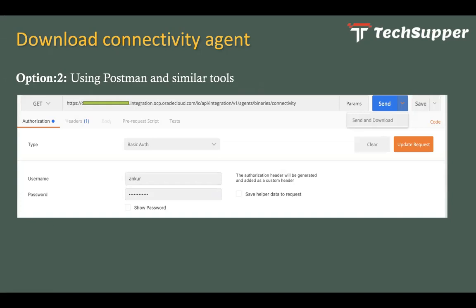The second option is using Postman or similar client tools. There is a unique URL: https://<OIC_URL>/ic/api/integration/v1/agents/binaries/connectivity. This is the endpoint that allows you to download the agent via Postman. You need to add basic authentication using your IDCS username and password. Click the send-and-download arrow, and it will download a file called response.zip, which you can save and rename. Once downloaded, transfer it to the host machine and install it.